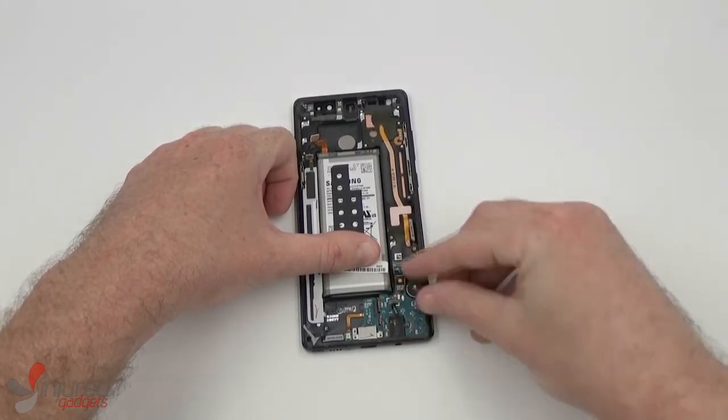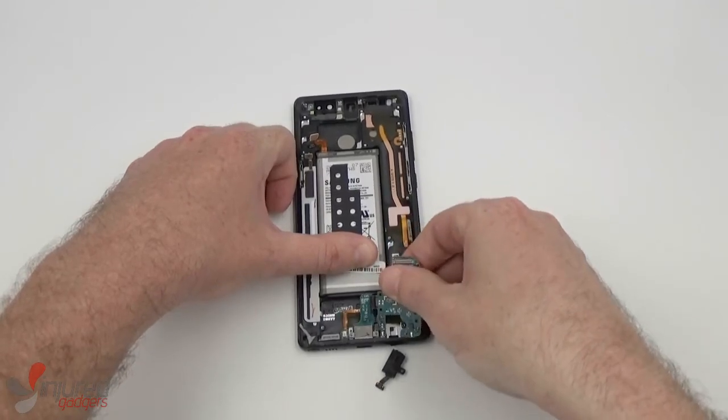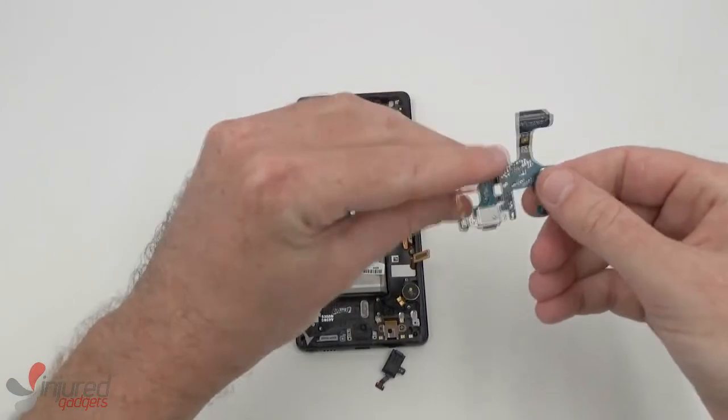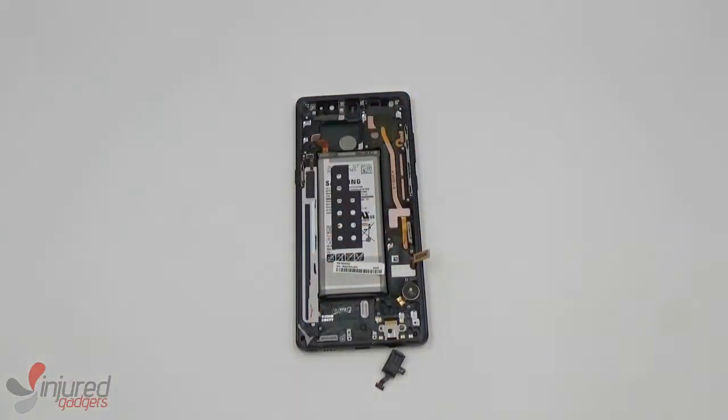Now to remove the dot connector, you'll first unplug the headphone jack. And then the Note 8's are nice because if you wiggle the dot connector, the headphone jack usually pops out on its own, and then the dot will come free quite easily.